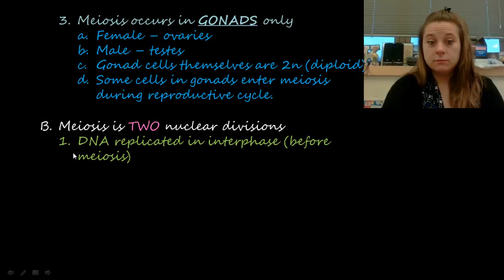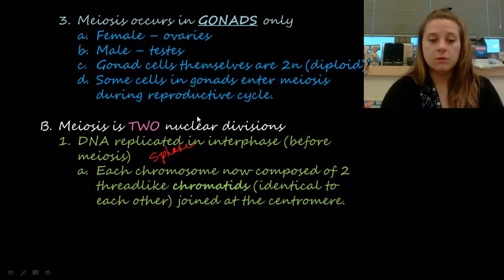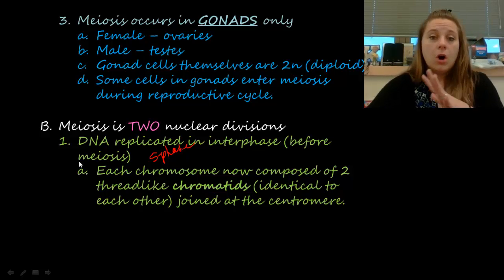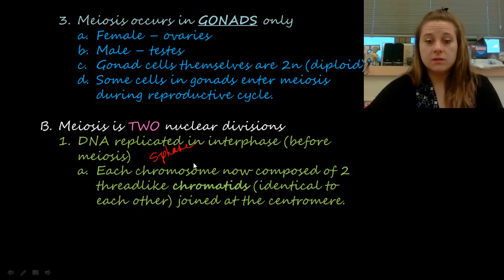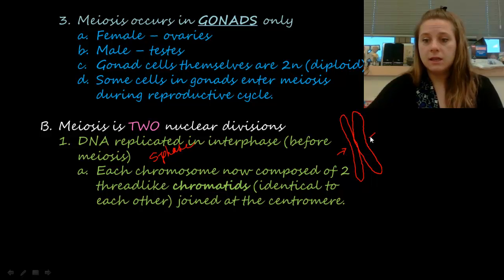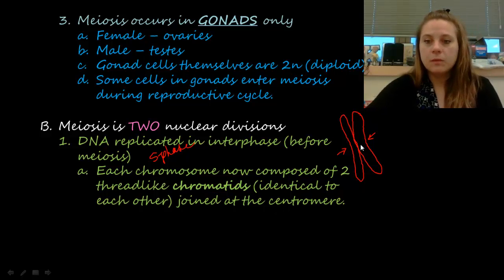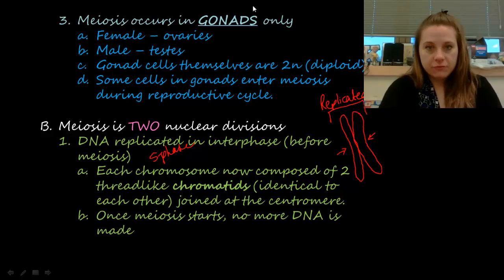DNA is going to replicate just like it does in mitosis — we're going to have the S phase of the cell cycle still occurring. DNA replication happens before we enter meiosis. Each chromosome is now composed of two chromatids, identical to each other, joined at the centromere. A chromatid just means it's a replicated chromosome — the chromosome has doubled up and the two copies are held together at a point on the chromosome called the centromere. After we enter meiosis, that's the only time the DNA is going to replicate; no more replication occurs.